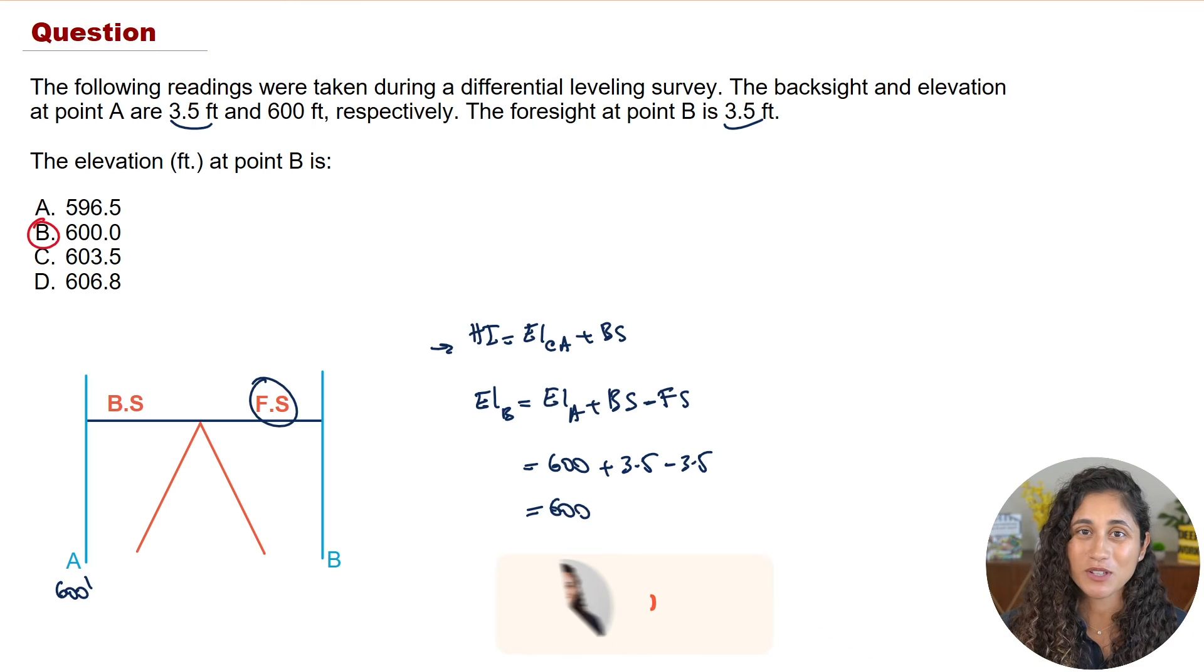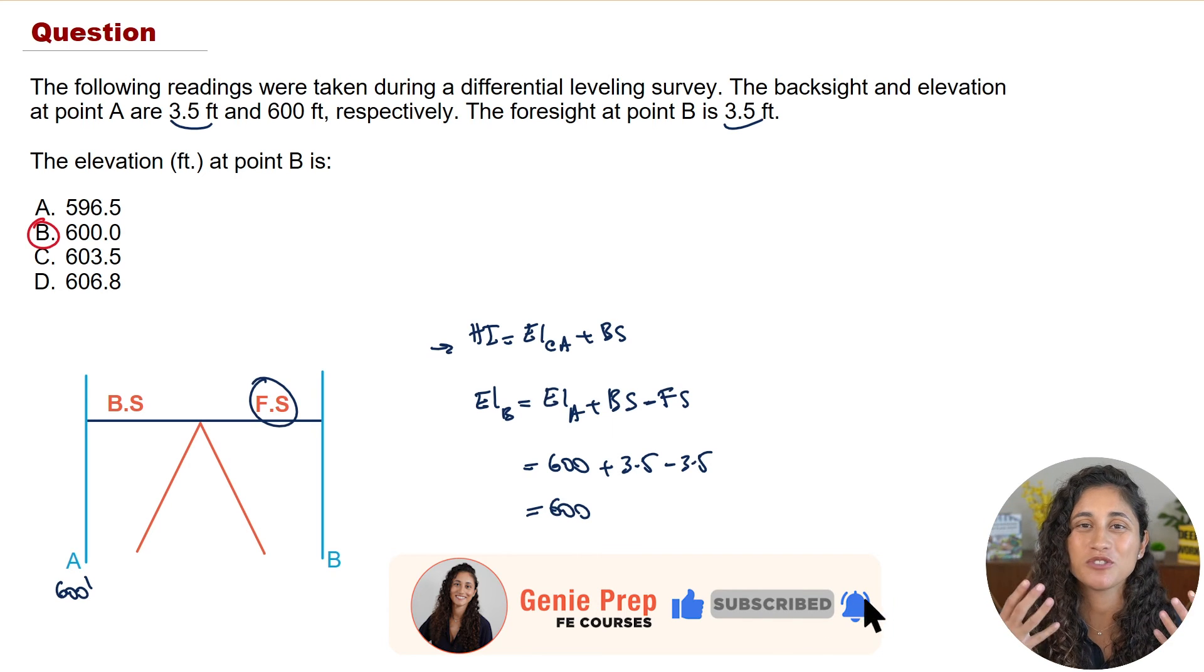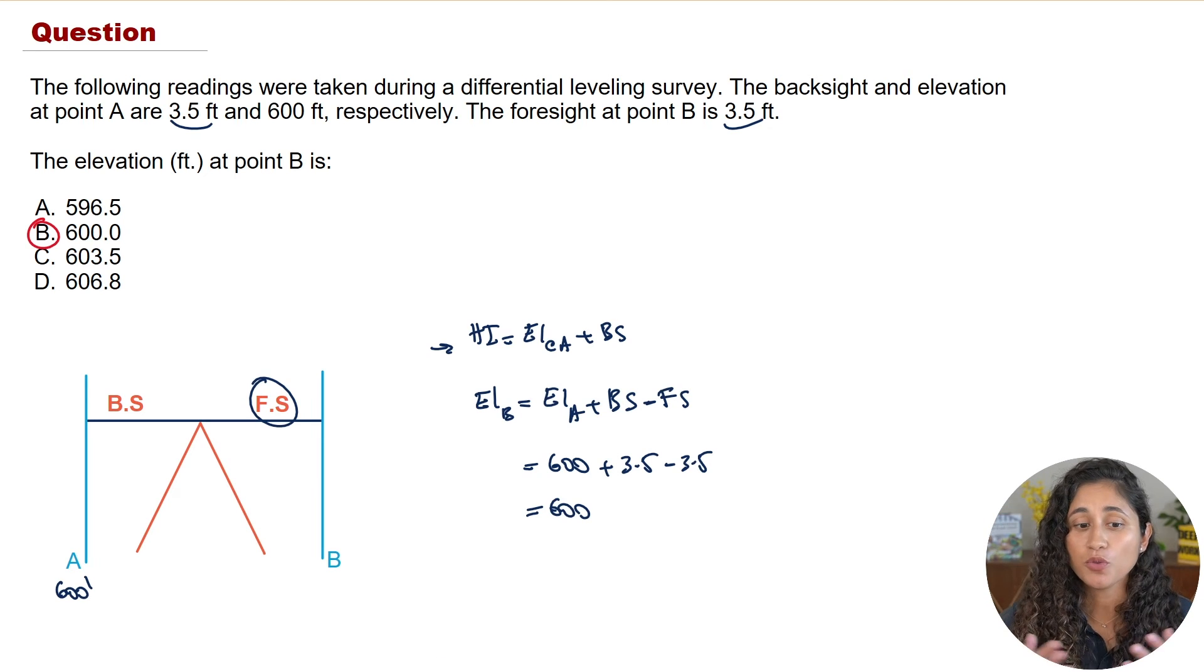Now if you guys found this problem helpful please don't forget to like and subscribe. It helps the channel out immensely. Now note here that the elevation at point A is the same as the elevation at point B, and that's because the backside and foresight are equal.